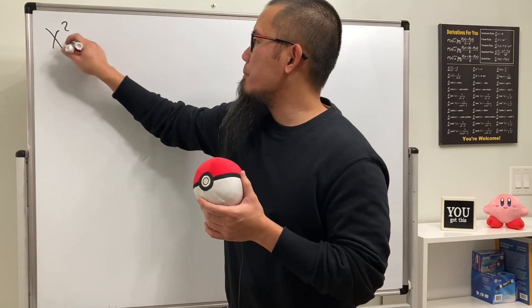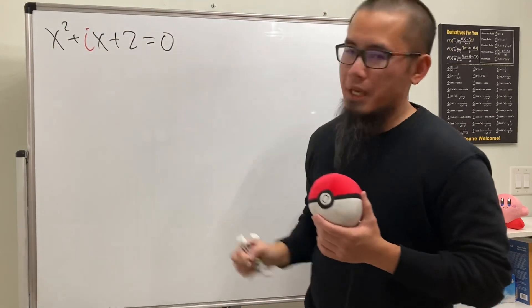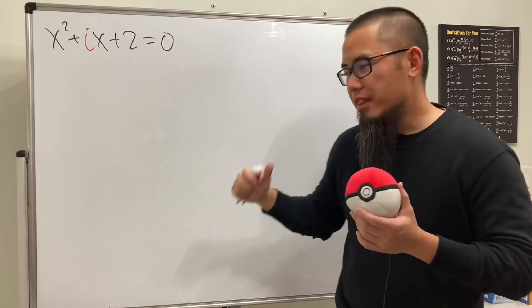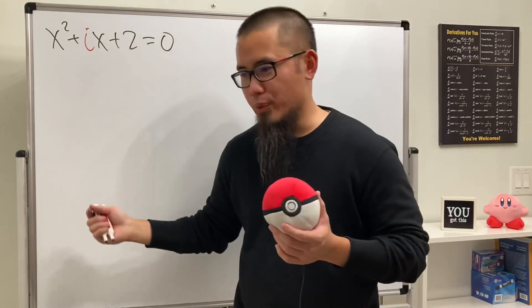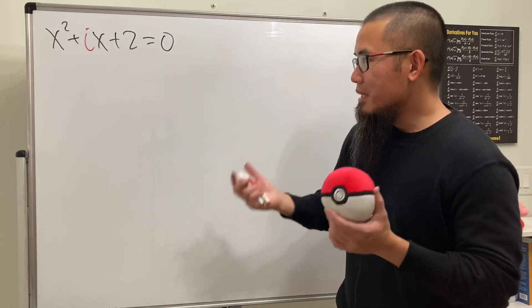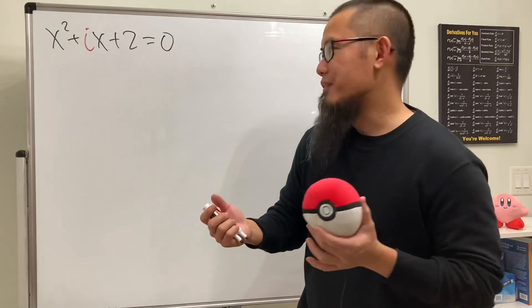Let's solve x squared plus ix plus 2 equals 0. I'll show you two ways to do it. The second way will be the quadratic formula. The first way is the cool way. What we're going to do is guess and check first, and this is perhaps one of the best methods ever.